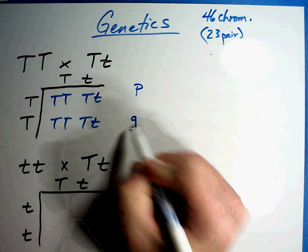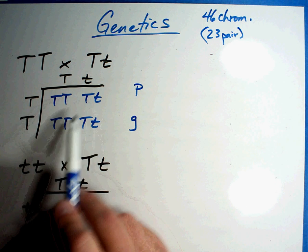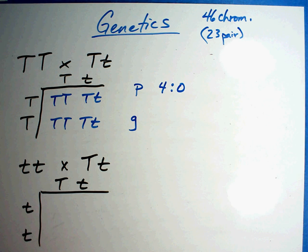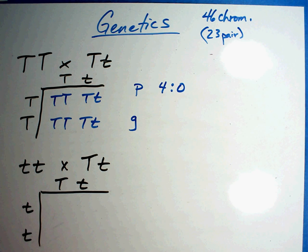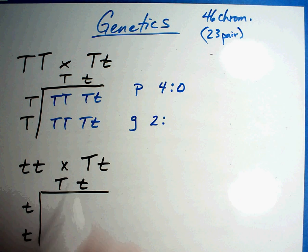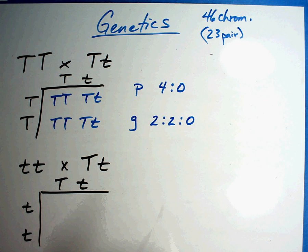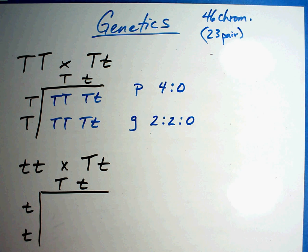Now let's check out our phenotype and our genotype. Physically, what do you see? I see 1, 2, 3, 4 talls and no short. The only way I would see short is if there's little t, little t. In the genotype, how many pure tall do I see? 1, 2 — there's 2 of those. How many mixed tall? 1, 2 — there's 2 of those. And you don't have any of the short. Percentages: 100%, 0%. Genotype: 50%, 50%, 0%. You may see the answers in either manner, but the percentages are pretty easy.